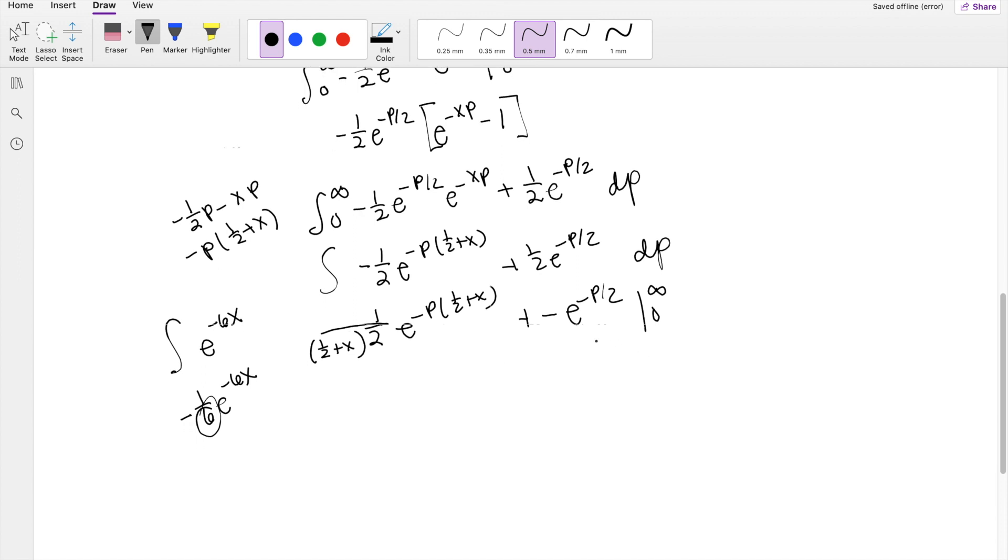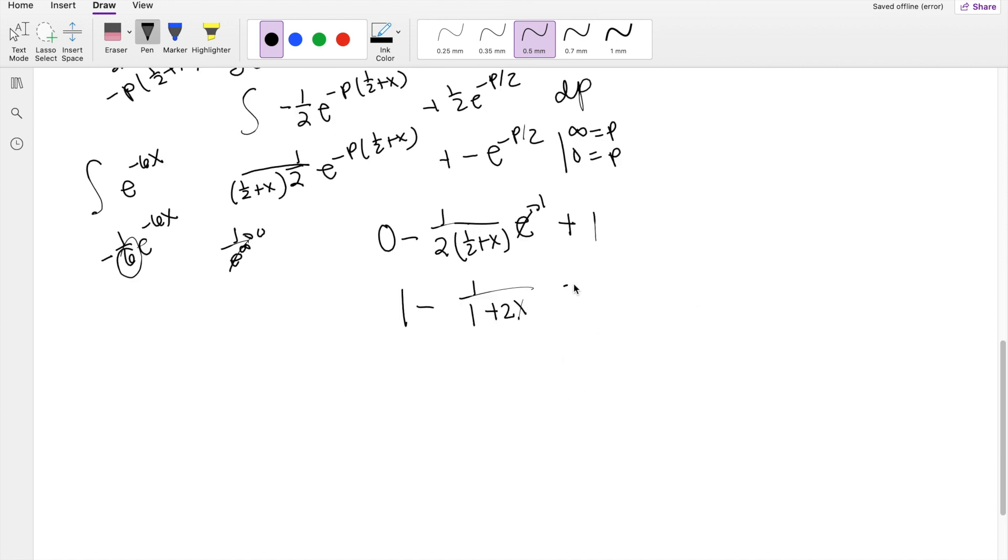Plugging in the upper limit here of infinity, you're just going to get 1 over a really big number, which is just 0, and same thing on this side, so this is going to be 0 minus, when I plug in 0 for P, you get for this one 1 half, 1 half plus x, e to the 0 which is just 1, so this just becomes 1 here, plus here if I plug in 0 you get 1. And then simplifying this out, this is essentially the same thing as 1 minus 2 over 1 plus 2x, which is equal to 2x over 1 plus 2x.